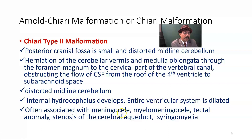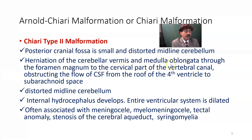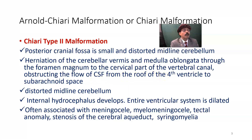Chiari type 2 is often associated with meningocele or myelomeningocele — a type of spina bifida where a membrane containing fluid and nerve roots is present in the lumbosacral region. There is also obstruction of the CSF flow from the roof of the fourth ventricle, where we have a central opening called the foramen of Magendie and lateral openings called the foramina of Luschka.